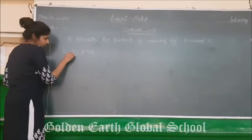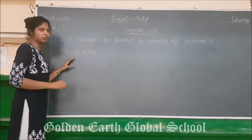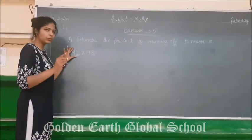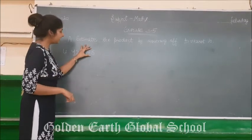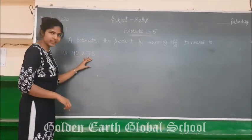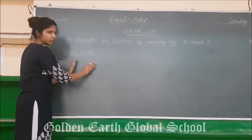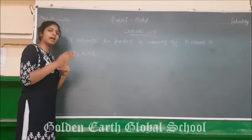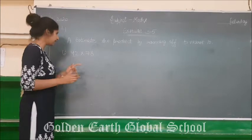It means, first of all, you have to round off this number to its nearest 10. Then you have to round off the second number to its nearest 10. Then what you got, you have to multiply those two numbers. Right?